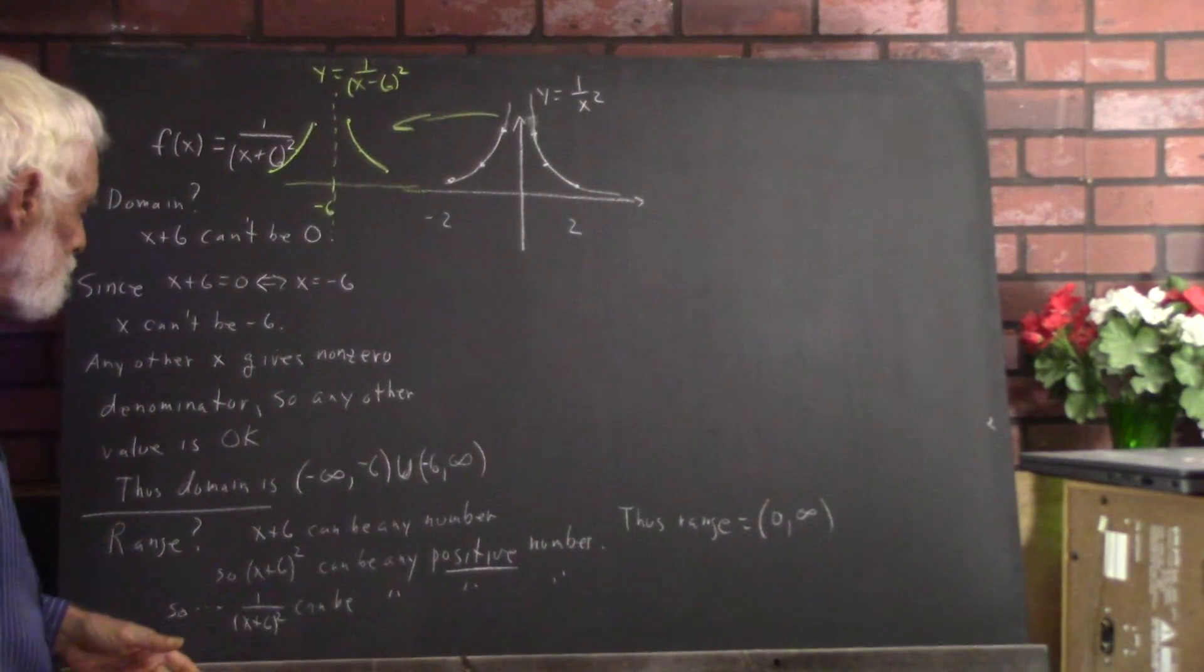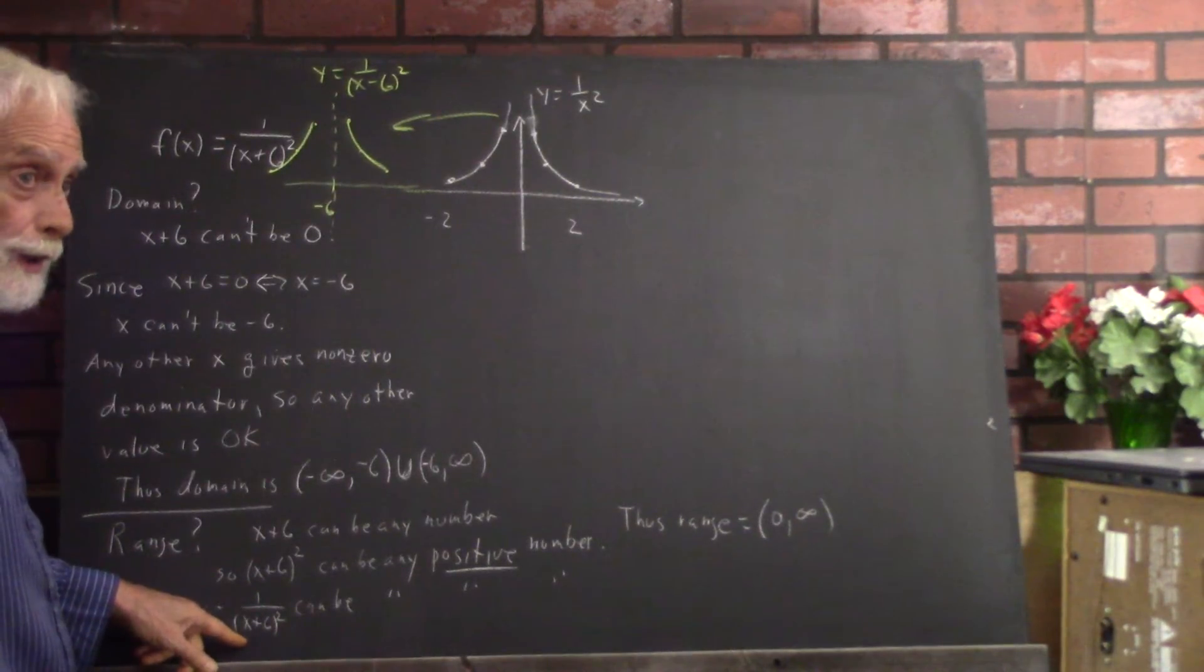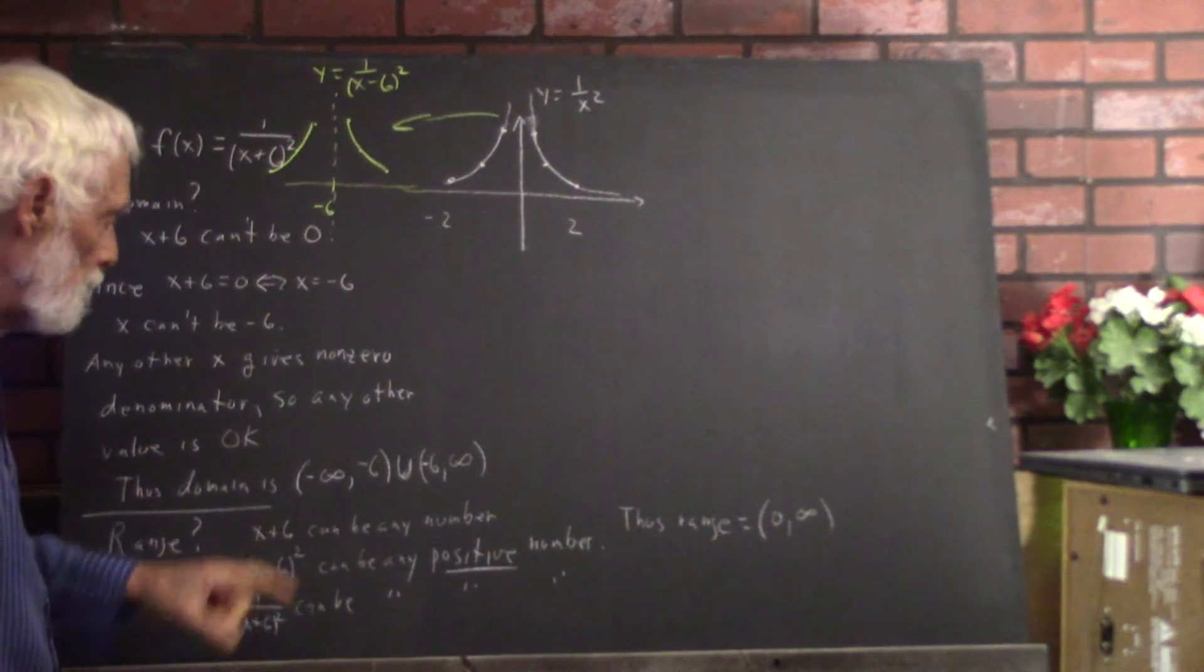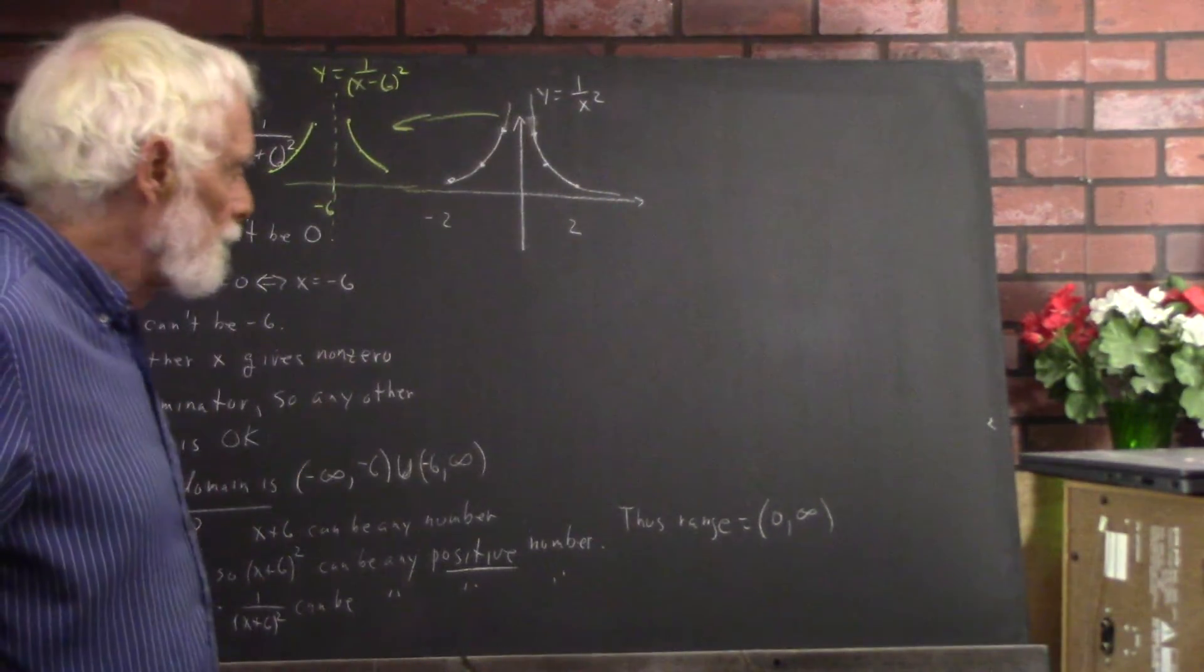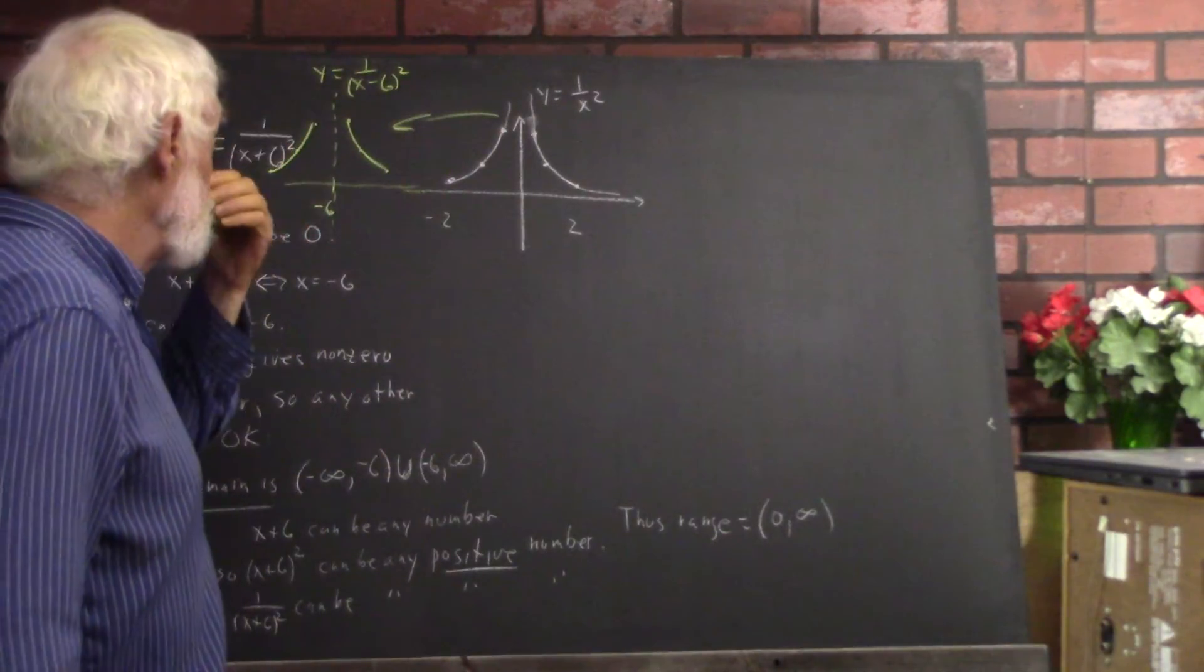And also, x plus 6 can be as big as you like. And if you divide 1 by something as big as you like, you can get a number as small as you like. So it follows that the range can be any number from 0 to infinity.